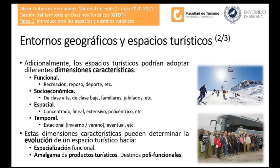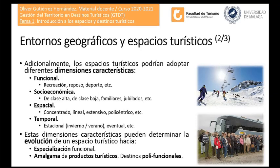Los espacios turísticos pueden adoptar diferentes dimensiones características: funcional, socioeconómica, espacial y temporal. Estas dimensiones pueden determinar la evolución de un destino hacia una especialización funcional o bien hacia una amalgama de productos turísticos. Tenemos destinos turísticos hiperespecializados, como la estación de esquí de Sierra Nevada, cuya actividad se concentra en un periodo muy específico de frío en el que hay o se puede fabricar nieve.